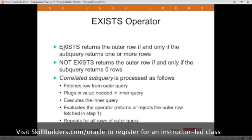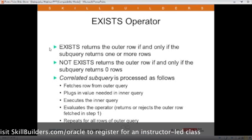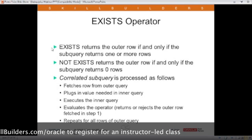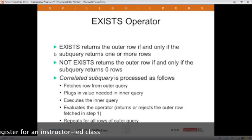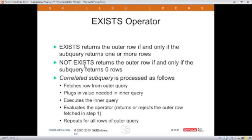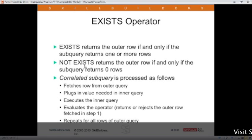The first thing to note is exists returns the outer row from the outer query if and only if the subquery returns one or more rows. If the subquery returns no rows, then the exist is false and it doesn't return the outer row. The not exist is just the reverse. The not exist returns the outer row if and only if the subquery returns zero rows.